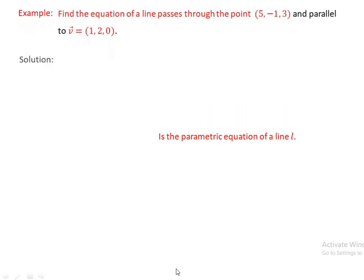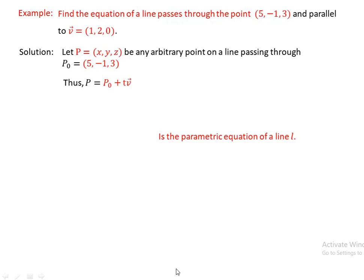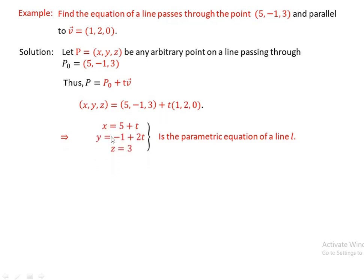Another example: Find the equation of a line passing through the point (5, -1, 3) and parallel to the vector V equals (1, 2, 0). The given point is P-naught equals (5, -1, 3) and the parallel vector V is (1, 2, 0). Let P of (x, y, z) be any arbitrary point on the line. Using the formula r equals P-naught plus t·V, we get (x, y, z) equals (5, -1, 3) plus t times (1, 2, 0).